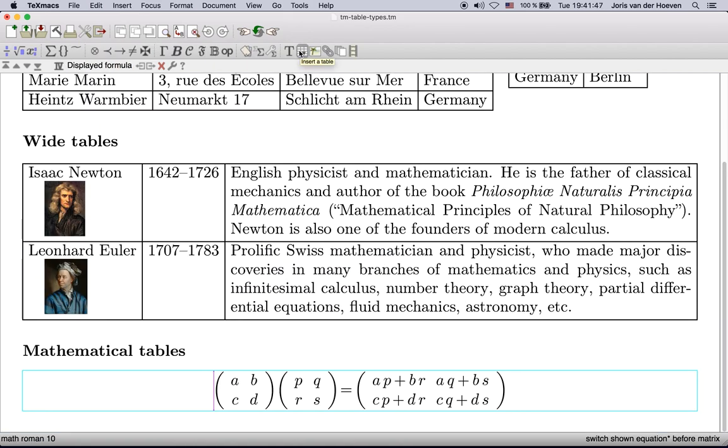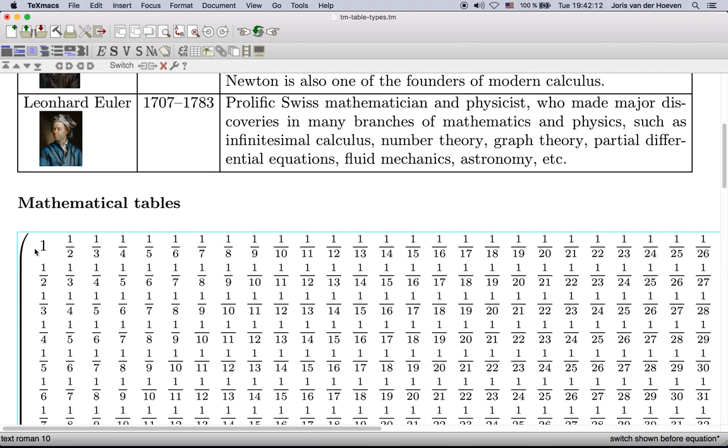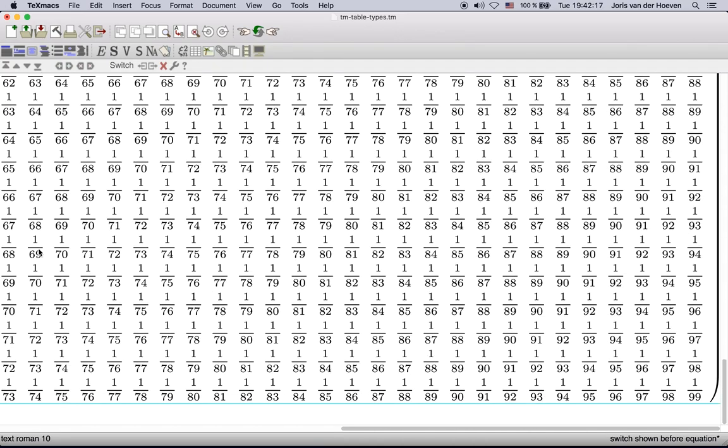Finally, inside math mode there are a few additional types of mathematical tables, such as matrices. These are again small tables, so you can put several of them on the same line. Again, very large matrices may not fit on a line, or even on a page. This is ok for screen editing, but might be a problem when printing your text out.